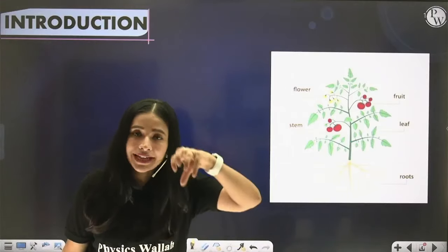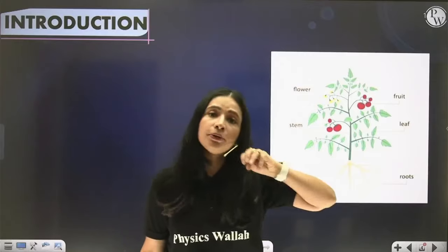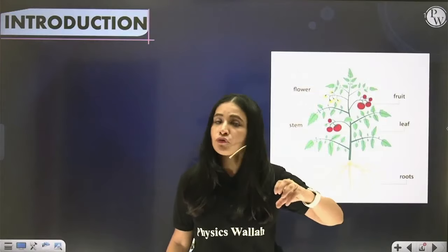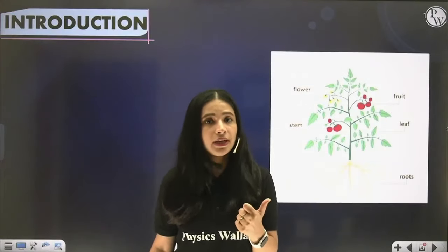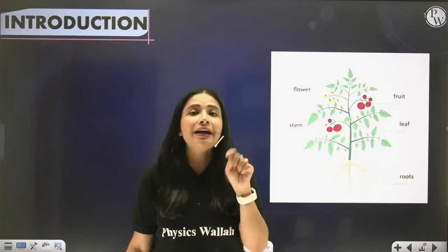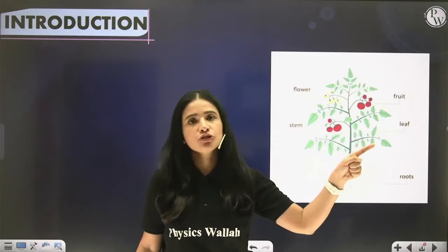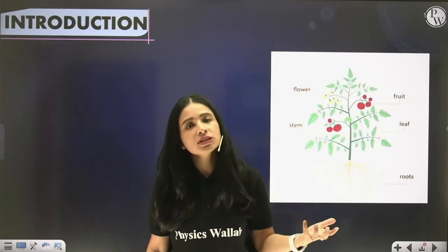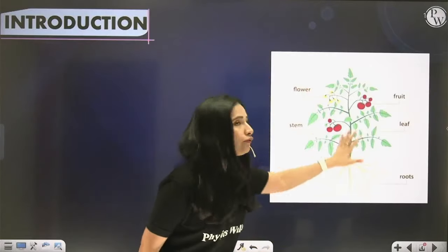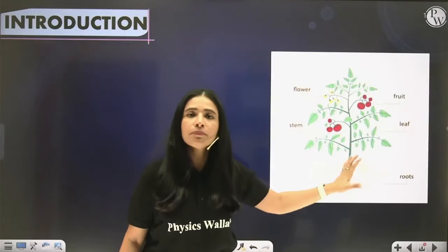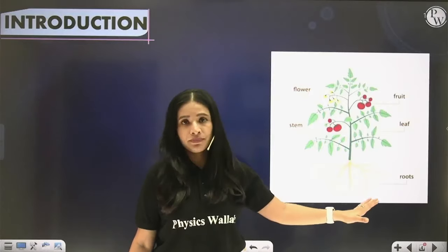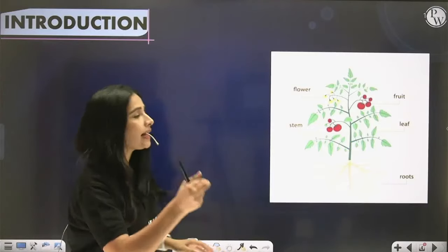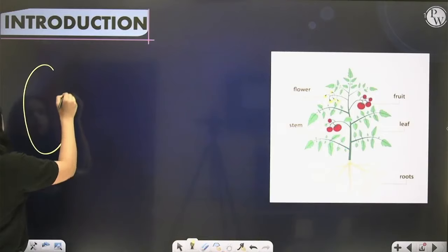Seeds contain the embryo within them. When seeds get favorable conditions, the embryo starts germinating to give rise to the plumule and the radicle. The plumule later develops into the shoot system, and the radicle develops into the root system. Finally, a whole full-fledged plant body is established — and the plant life starts simply from a seed.